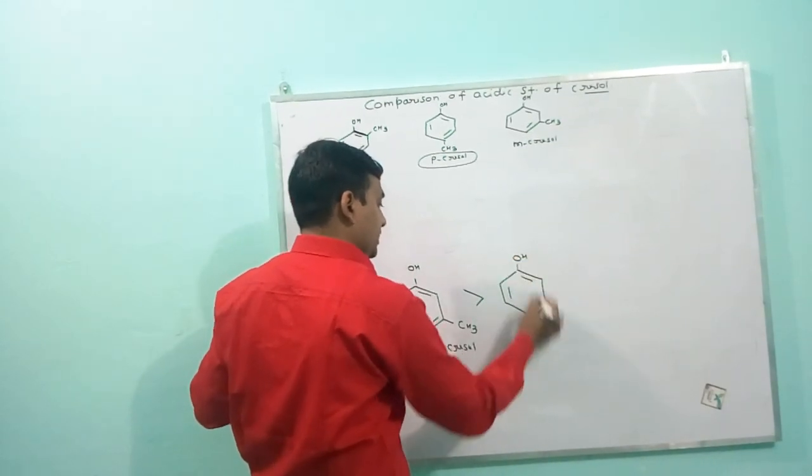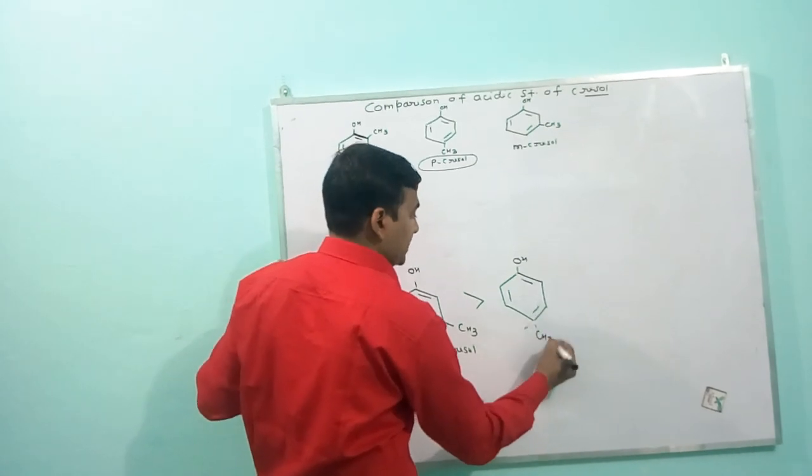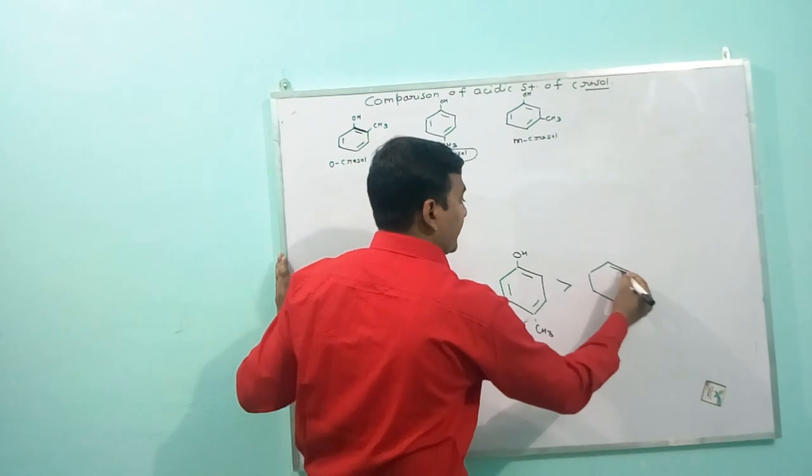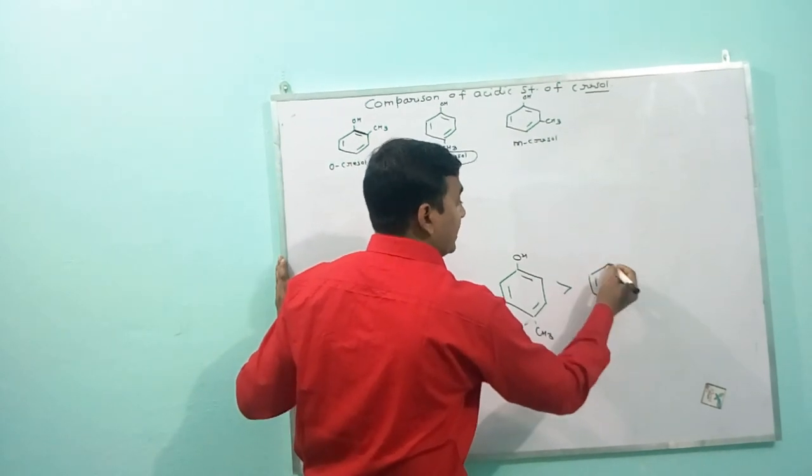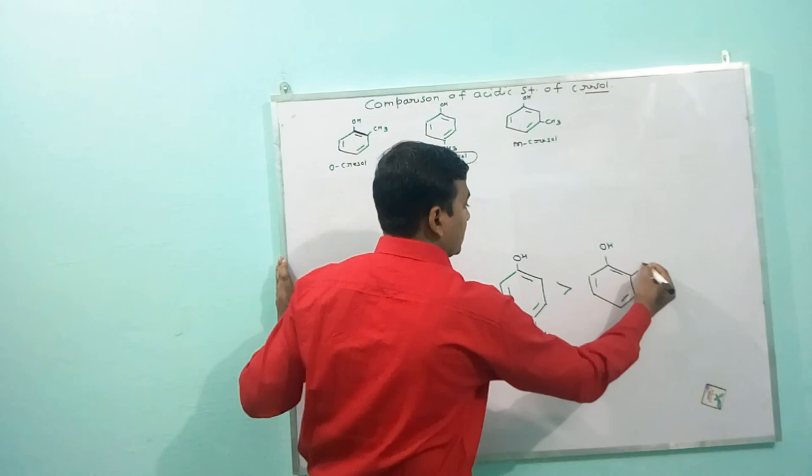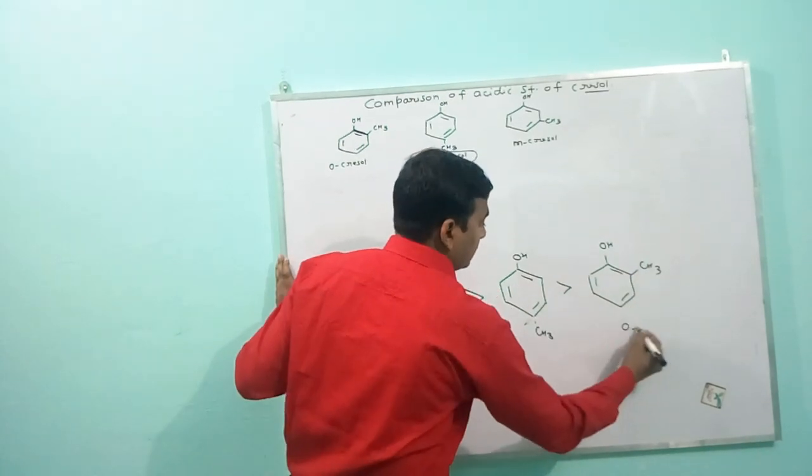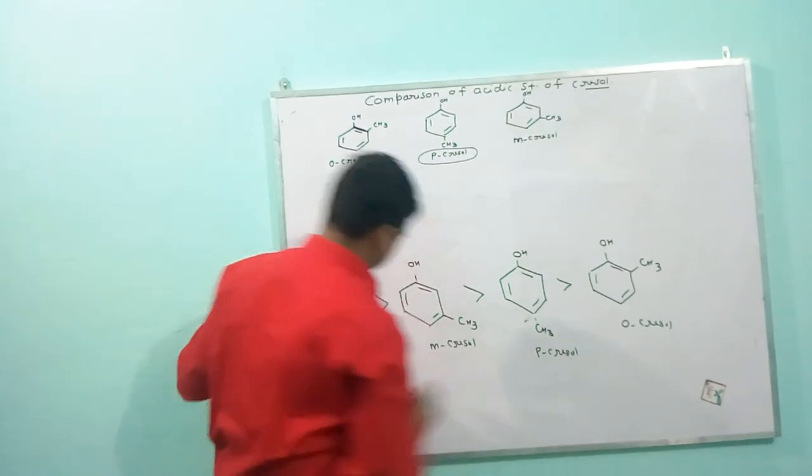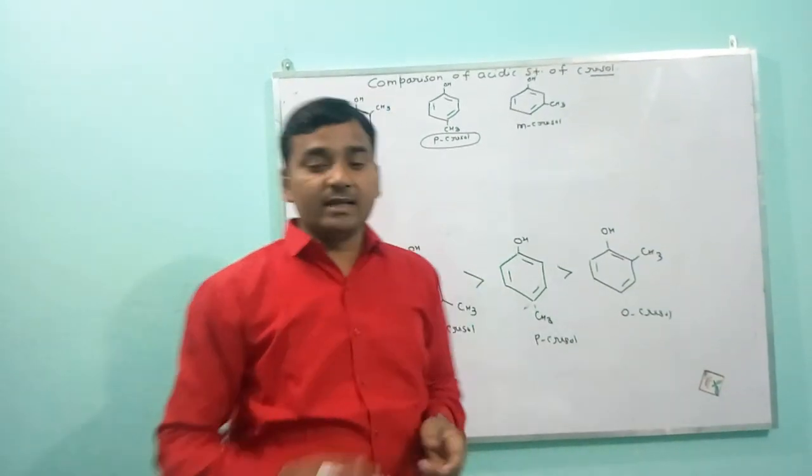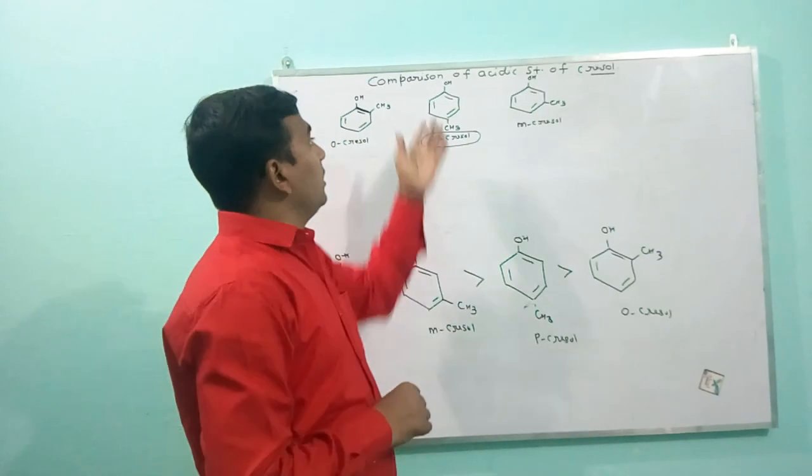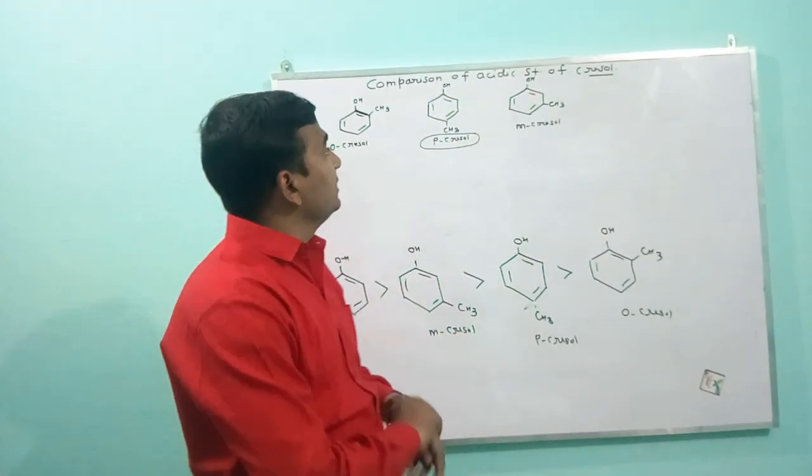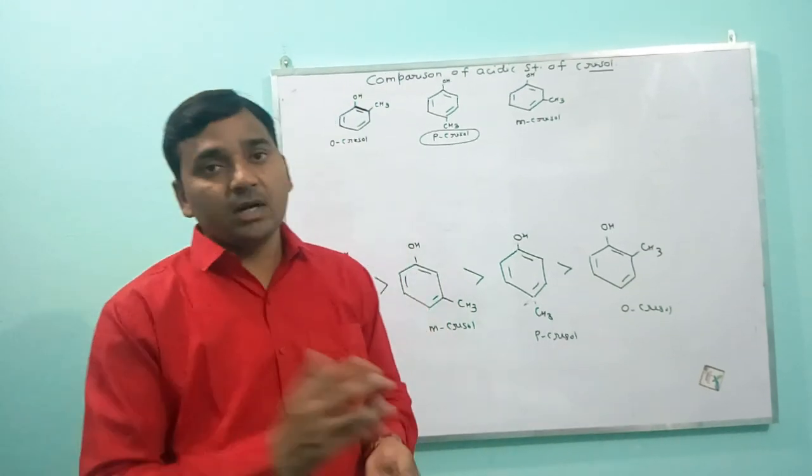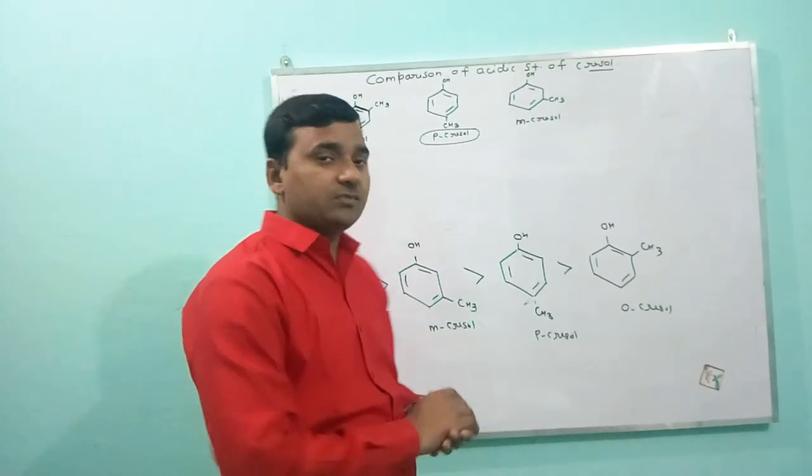So, here the least acidic is ortho cresol, then para cresol. I think you have understood the acidic strength of phenol and cresol and also between the ortho, para and meta cresols. So, thank you for watching us.